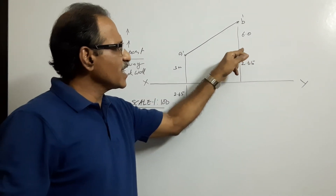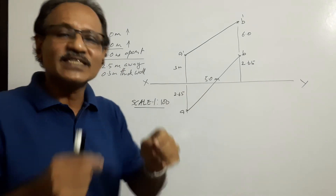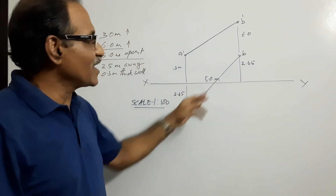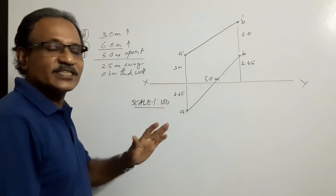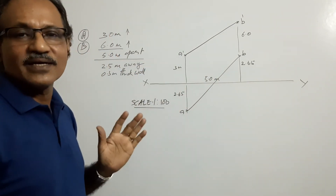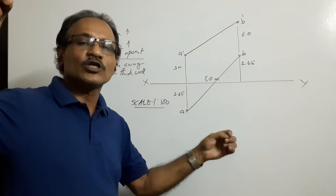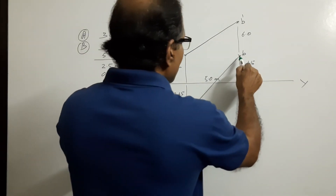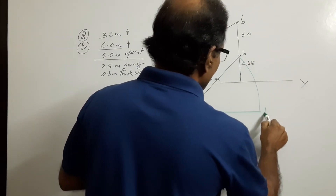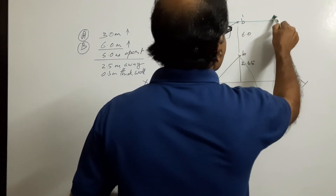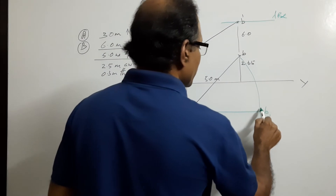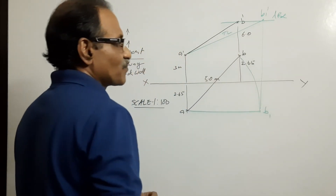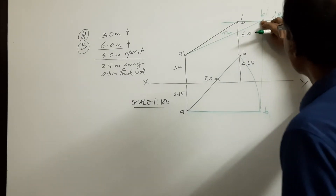A–B and A dash–B dash are the plan and elevation of the string connecting the two oranges — the string is treated as a line. This is the plan of the line and this is the elevation of the line. To find the true length: make AB parallel to XY to get B1, draw the locus of B dash, project B1 to get B1 dash, and connect A dash to B1 dash — that is the true length.